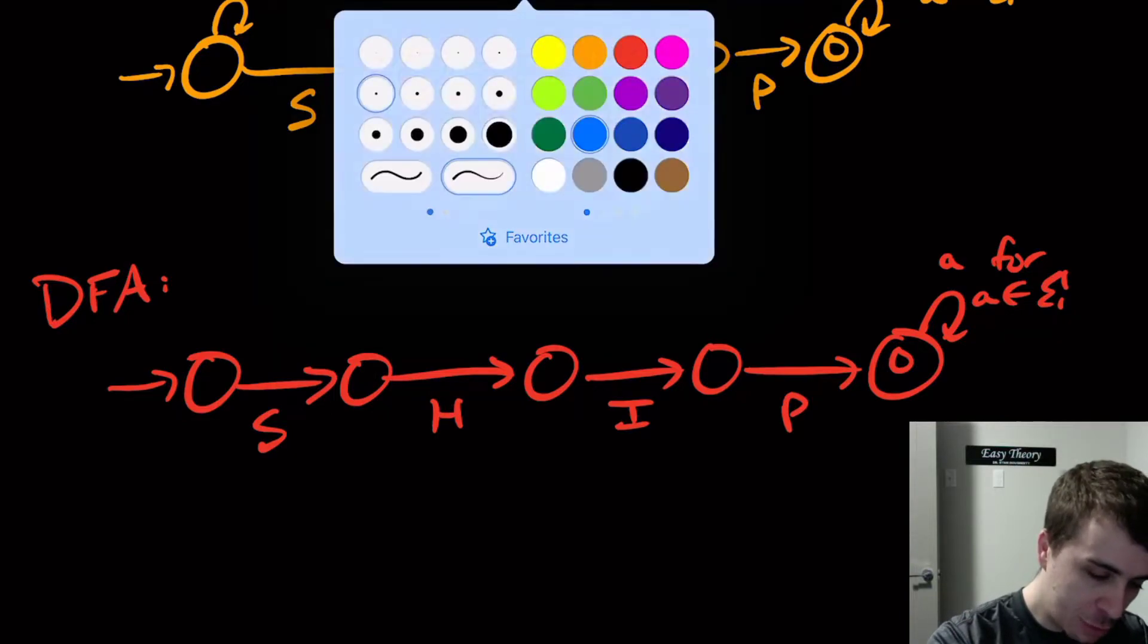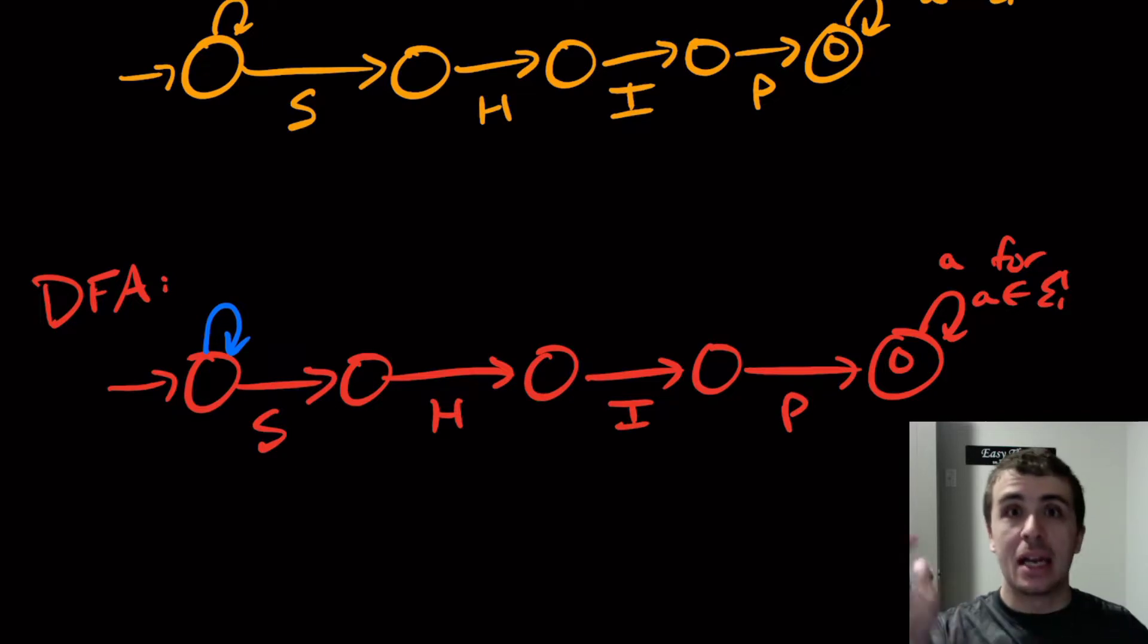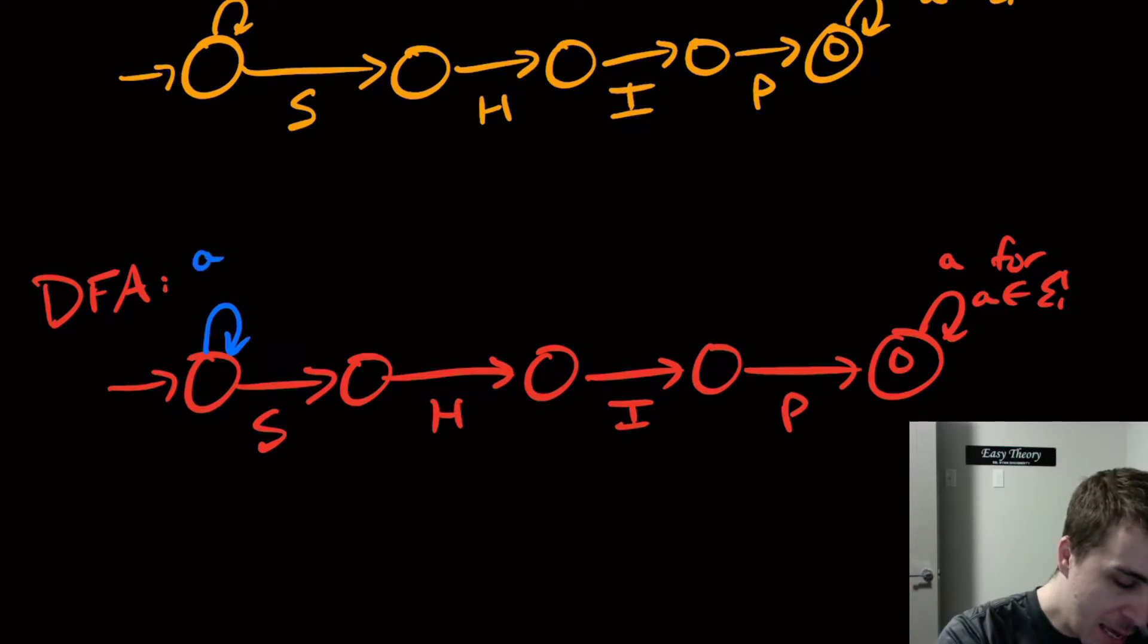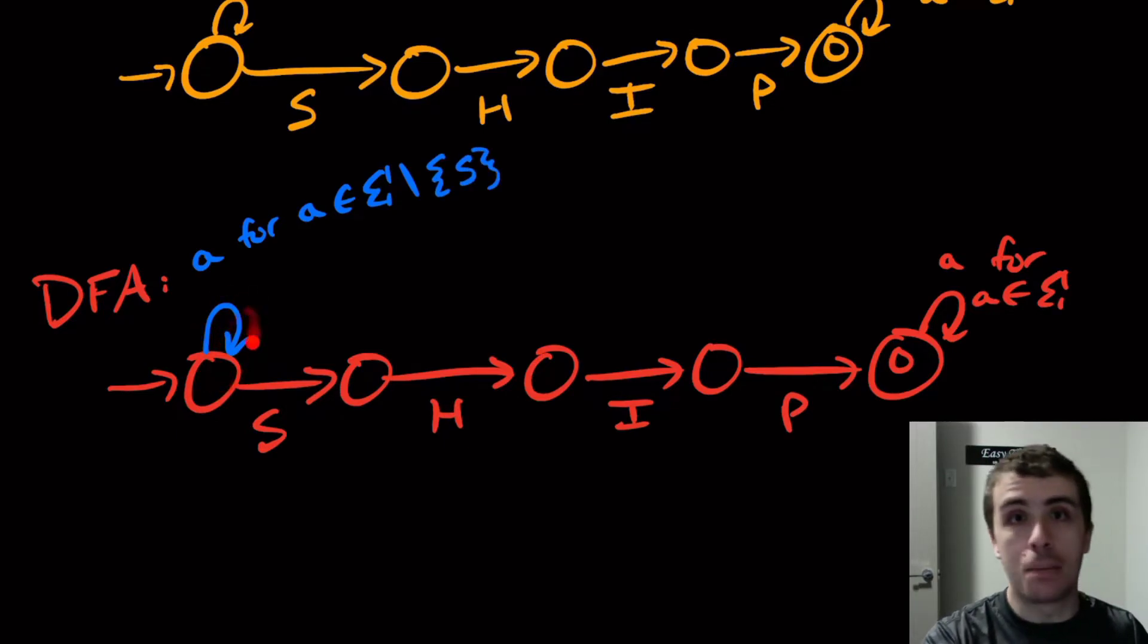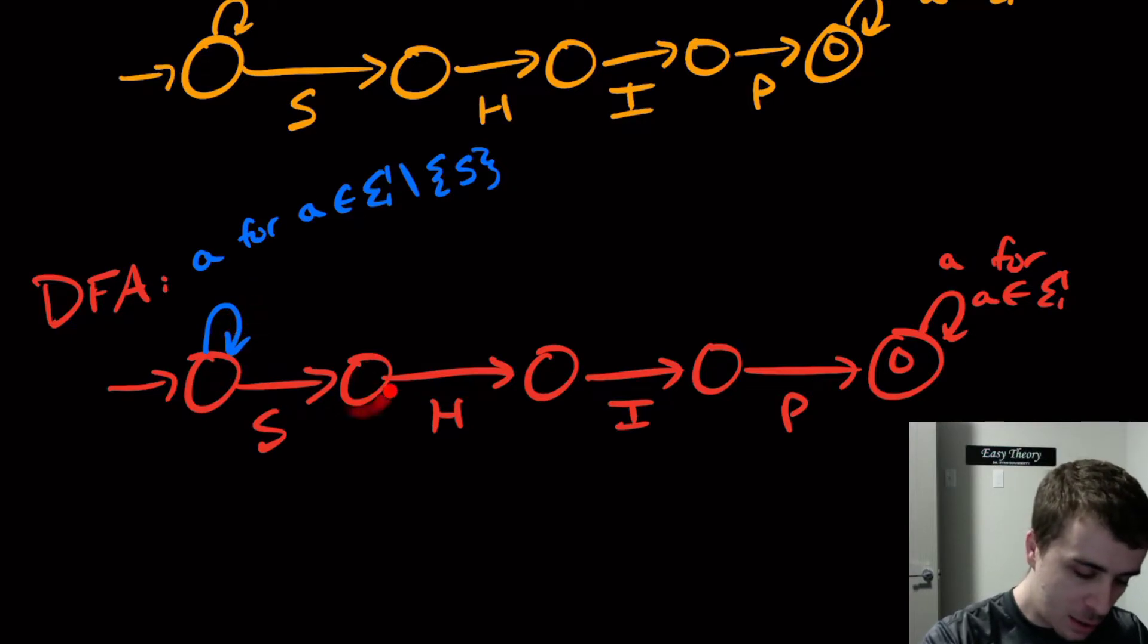What we're going to do is have a self-loop on the first state for anything that is not S. So a for a in Sigma set minus the letter S, so every other possible transition here other than S.